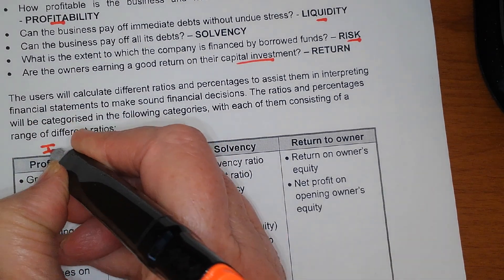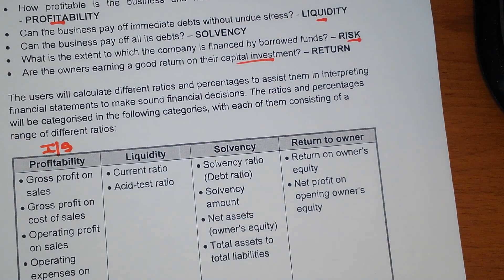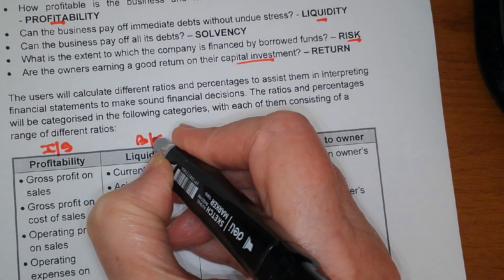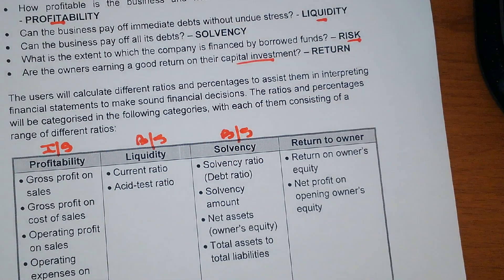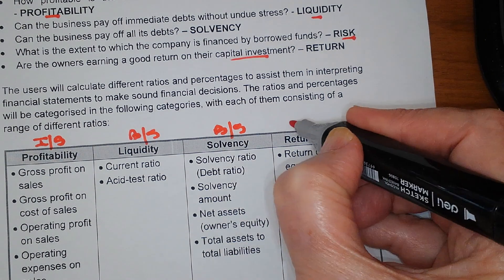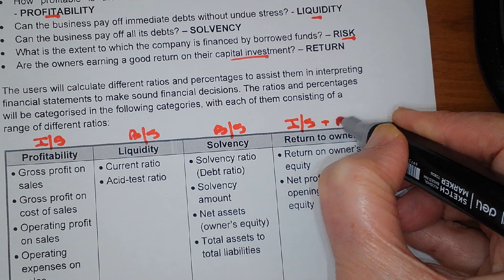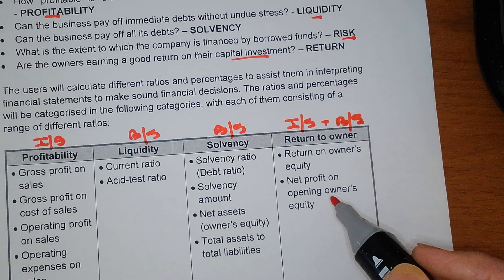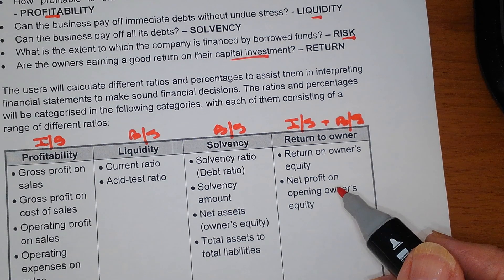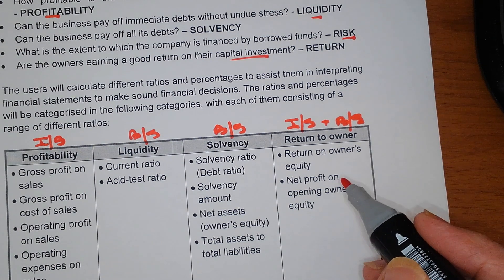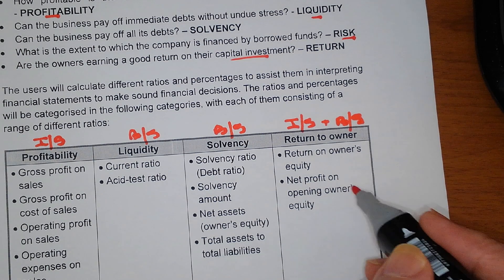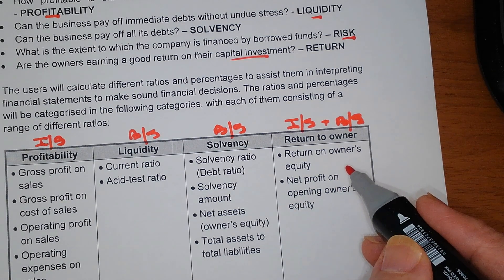To summarize the data sources: for profitability calculations, we take information from the income statement. For liquidity and solvency, the information comes from the balance sheet. For return to the owner, we take profit from the income statement and capital from the balance sheet — or from the note for equity, which gives capital plus profit less drawings.